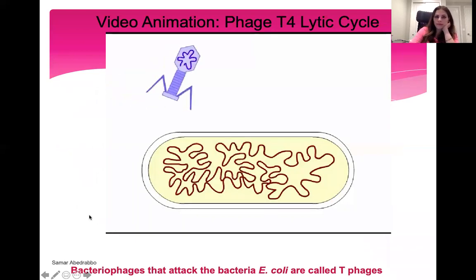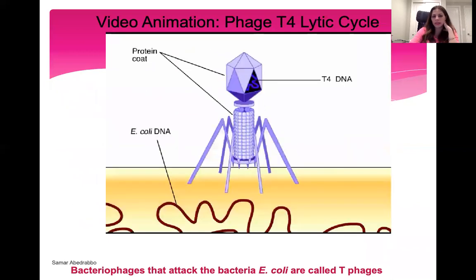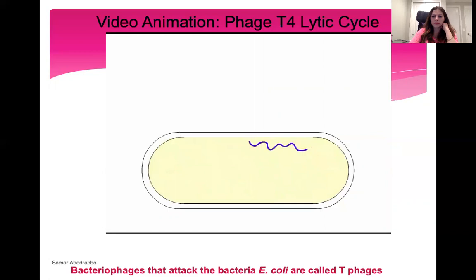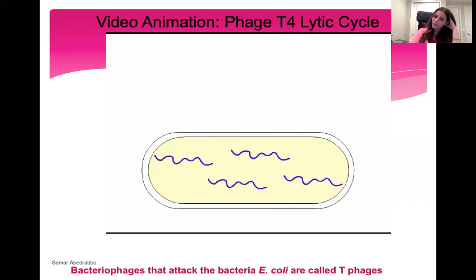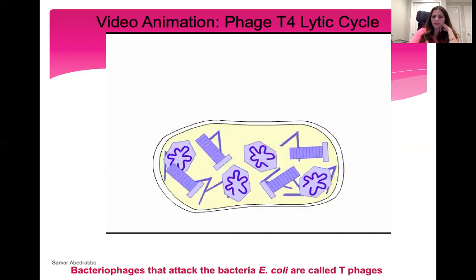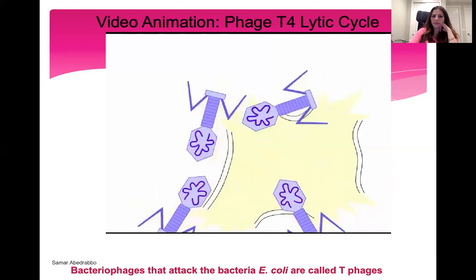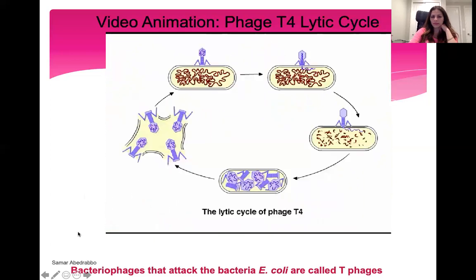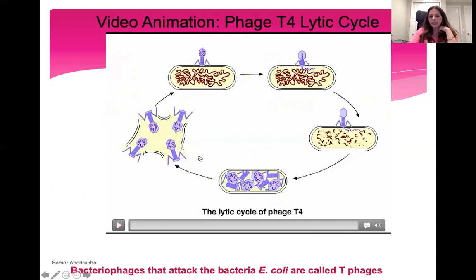Here's a video summarizing bacteriophages attacking E. coli. Bacteriophages are viruses that infect bacteria. This is a T4 phage, which consists of DNA inside a protein coat. The lytic cycle begins when the tail fibers of the phage stick to receptor sites on the surface of a host bacterium such as E. coli. The phage injects its DNA into the host cell, leaving the empty protein coat outside. The host cell's DNA is destroyed and its enzymes are commandeered to replicate the phage DNA. Host cell enzymes and ribosomes transcribe and translate phage genes into phage proteins, which assemble into new phages. A phage enzyme digests the bacterial cell wall and the cell ruptures — as many as 200 phages spill out, each able to infect another cell.